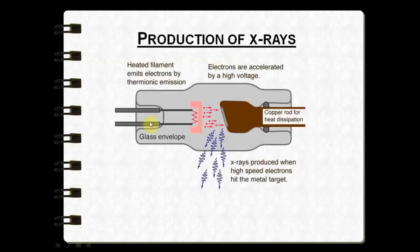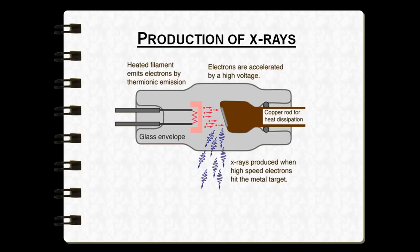Now we will discuss how x-rays are produced. Once the x-ray machine is turned on, electric current moves to the control panel and is directed to the tube head through electrical wires in the extension arm. This current is directed towards the filament in the cathode with the help of a step-down transformer, which converts the line voltage of 110 to 220 volts down to 3 to 5 volts to heat the tungsten filament.